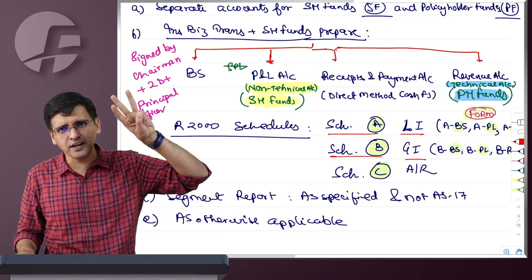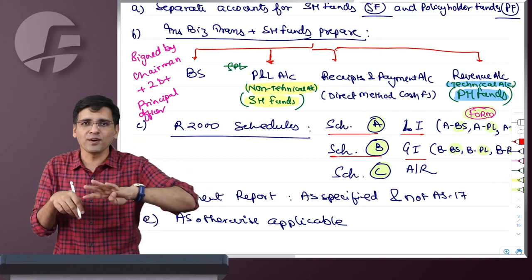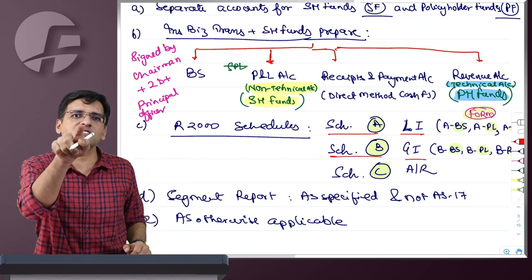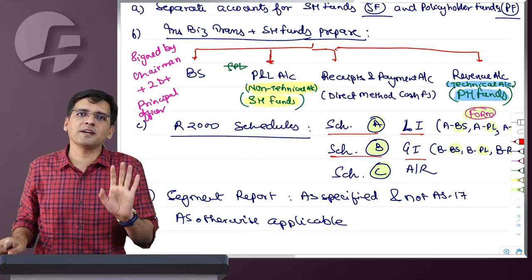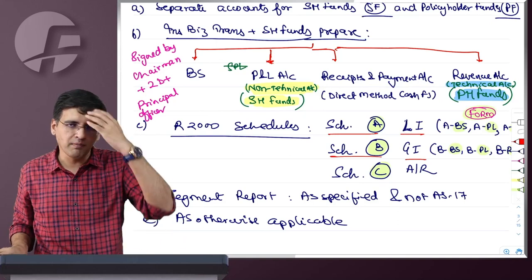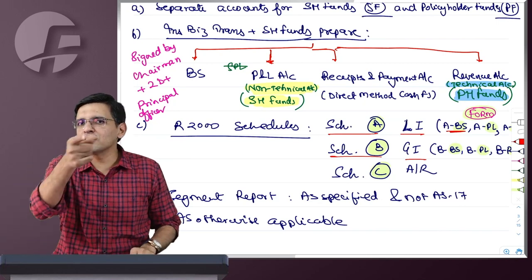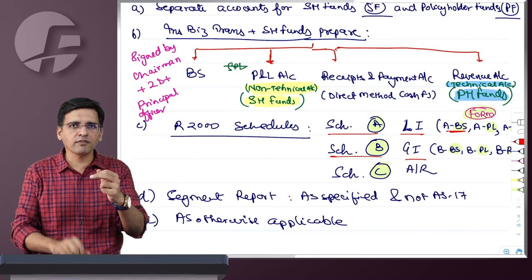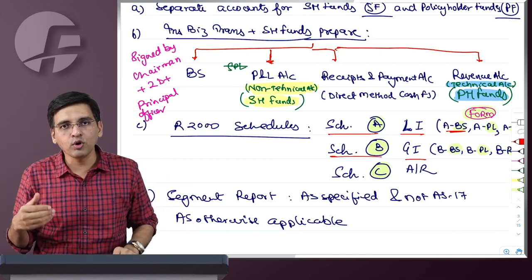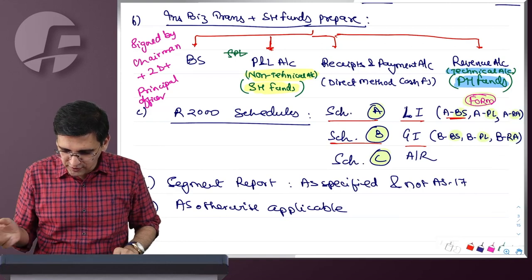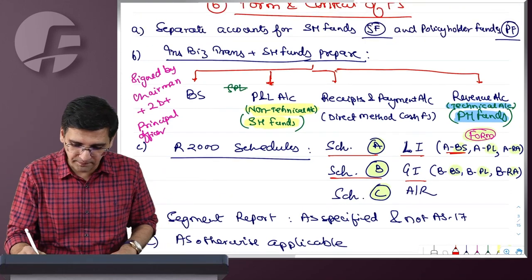Now the key matter — how does an insurance company prepare financial statements? Section 129 financial statement Schedule 3 formats do not apply because under Insurance Act 1938, IRDA was formed, under which Regulations R2000 were made, under which three schedules were formed: Schedule A for life insurance, Schedule B for general insurance, and Schedule C for the auditor's report format. Under Schedule A and B, the balance sheet, profit and loss account (not 'statement of profit and loss'), revenue account, and receipts and payment account (not cash flow statement) must be prepared.